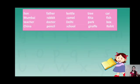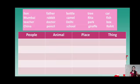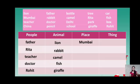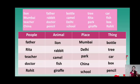Children, these are some naming words given in your textbook page number 3. You have to identify whether they are names of people, animals, places or things. Father, Rita, Teacher, Doctor and Rohit are the names of people. Lion, Rabbit, Camel, Fish and Giraffe are the names of animals. The names of places are Mumbai, Delhi, Park, China and School. And the names of things are Bottle, Tree, Car, Box and Pencil.